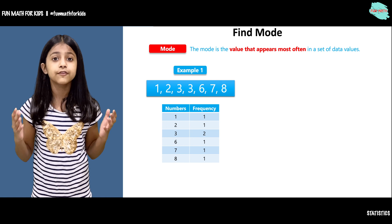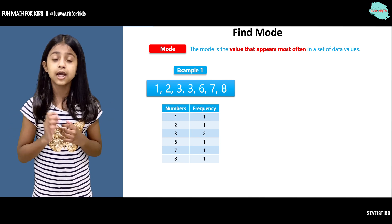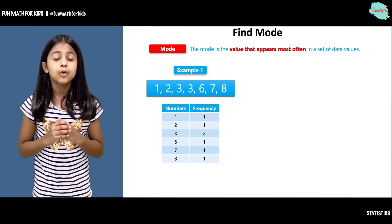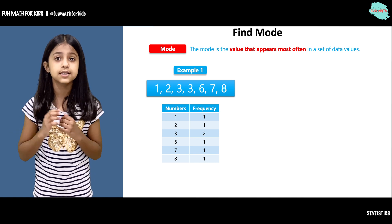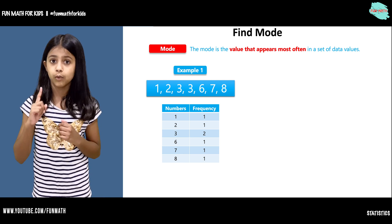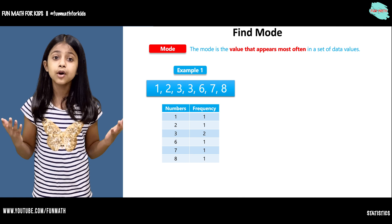Here we have a frequency table to tell us how many times each number has appeared in the data set. 1 and 2 have appeared once, 3 has appeared twice, 6, 7, and 8 have appeared once. So what is the mode here?